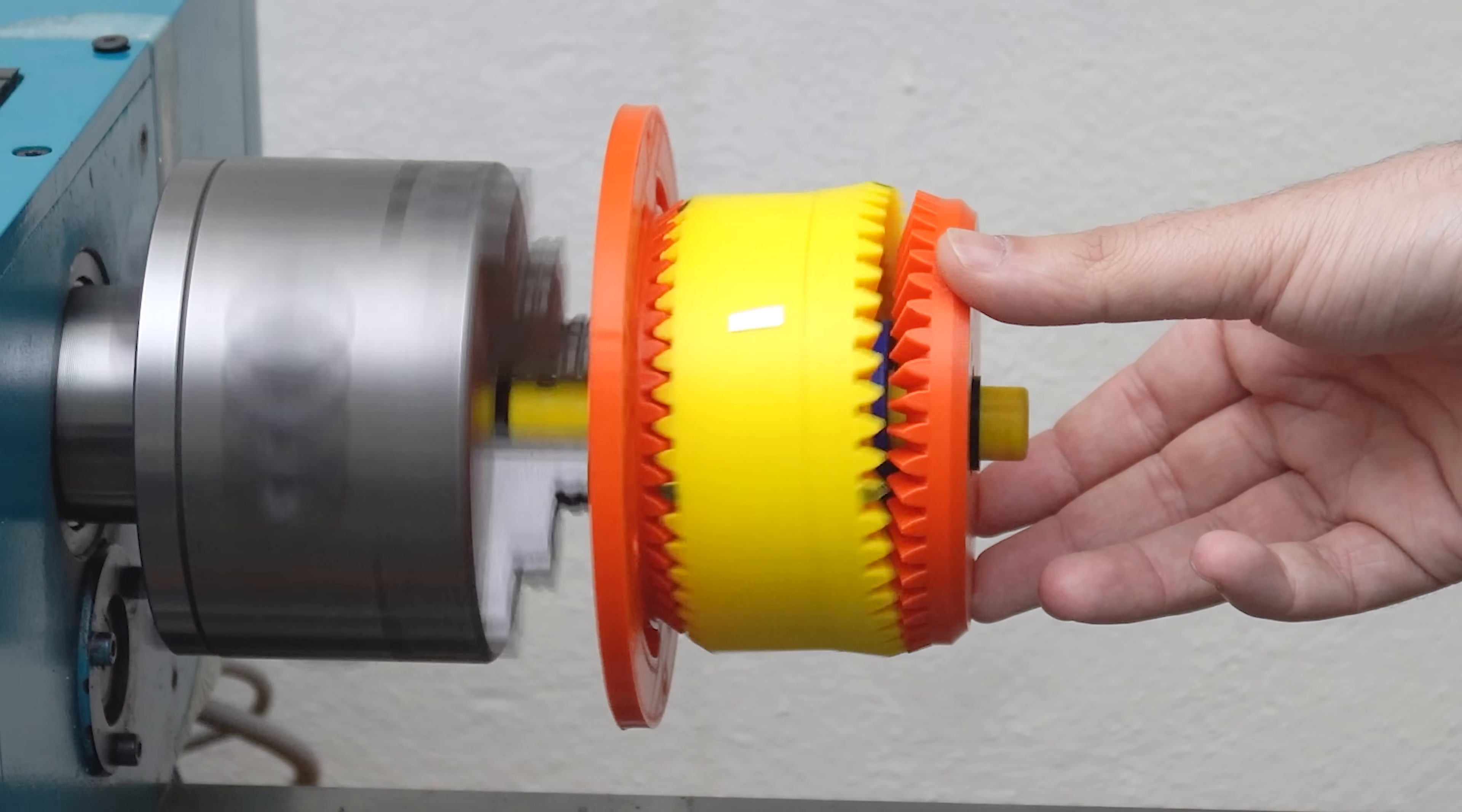If I release the reaction gear by the way, the gear ratio is broken. All three start rotating at the same speed, like a clutch. And if I hold the output gear, the reaction gear rotates in the opposite direction.